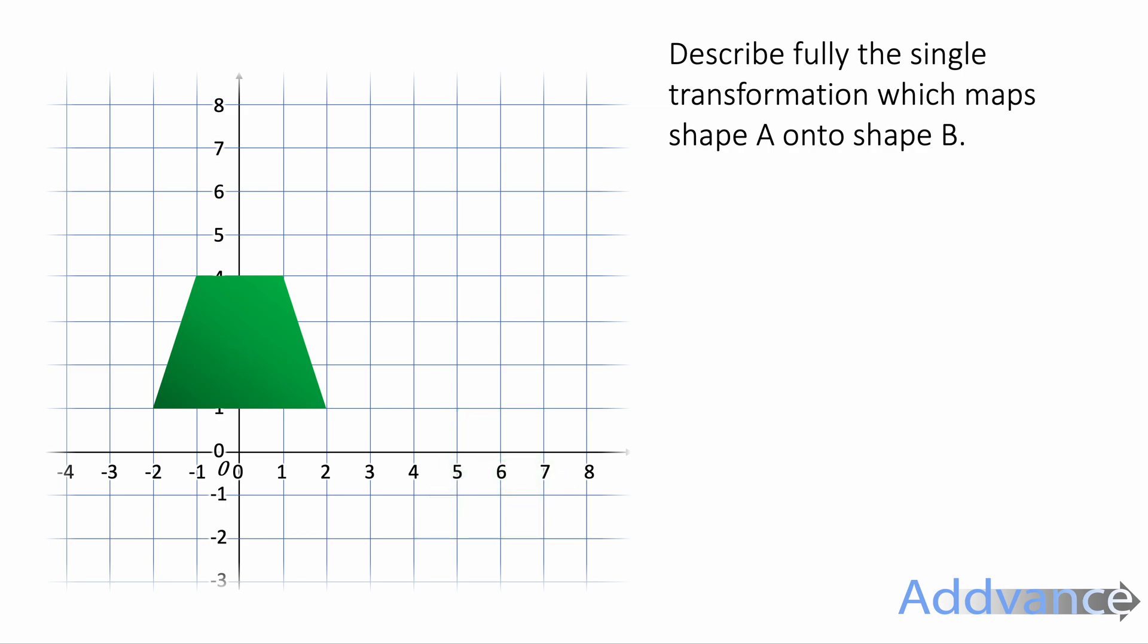You should see that this is a translation because you're moving the shape from one place to another. The shape isn't changing its angle, it's not changing its size, it's not being reflected, it's just changing where it's positioned. And so that's called a translation.